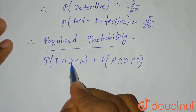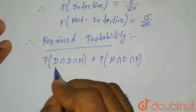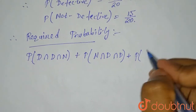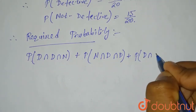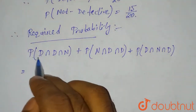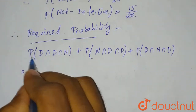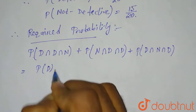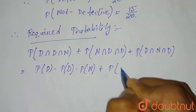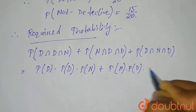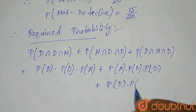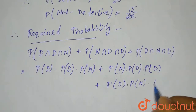So we have: probability of first one defective, second one defective and the third one good; plus probability of first one defective, second one good, and the third one defective. Since the trials are independent, probability of D and D and N equals probability of D into probability of D into probability of N, plus probability of N into probability of D into probability of D, plus probability of D into probability of N into probability of D.